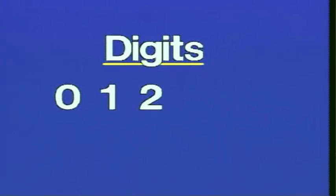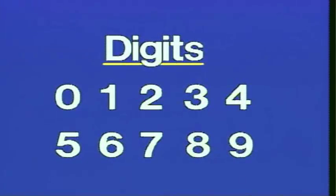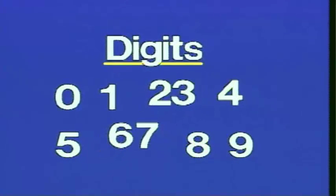Whole numbers are formed using digits and there are 10 of them. I'm sure you've seen these before: 0, 1, 2, 3, 4, 5, 6, 7, 8, and 9. Those are our 10 digits, and those digits are useful in forming numbers. When the digits are arranged in a particular pattern, then we have a number. Notice that there are five digits being used here.